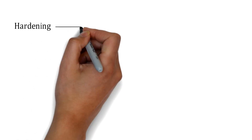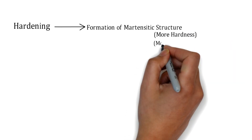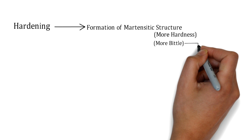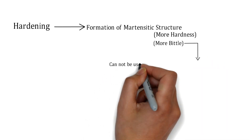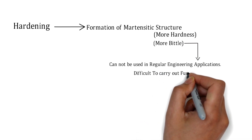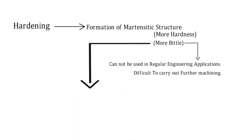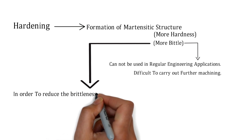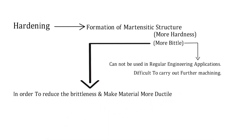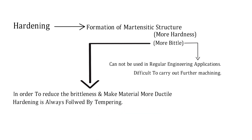In the last video we learned the process of hardening heat treatment. Hardening heat treatment is the formation of martensitic structure from austenitic structure. This martensitic structure has more hardness and more brittleness, so it is not suitable for regular engineering applications. This part is also very difficult to machine further due to risk of failure. In order to make it suitable for our desired applications, we need to reduce the brittleness and make the material more ductile. For this reason, hardening is always followed by the tempering process.